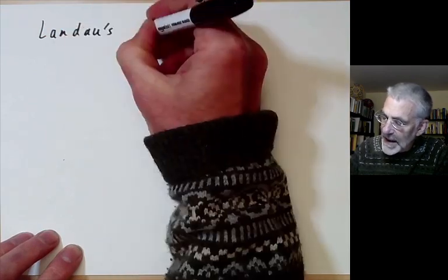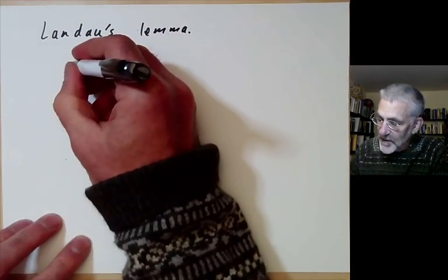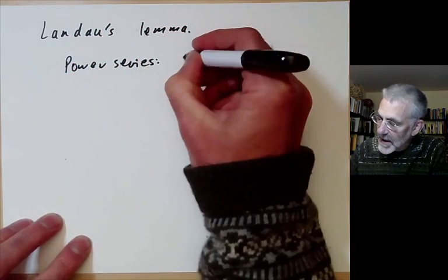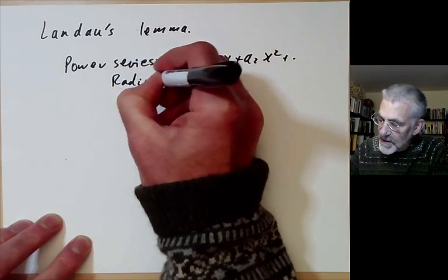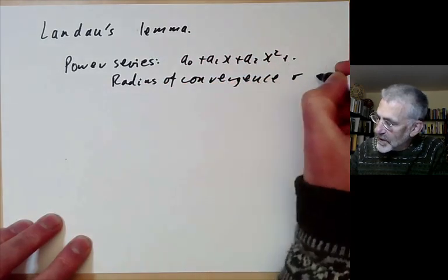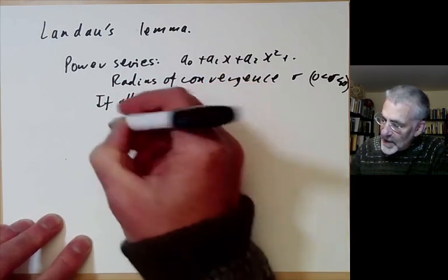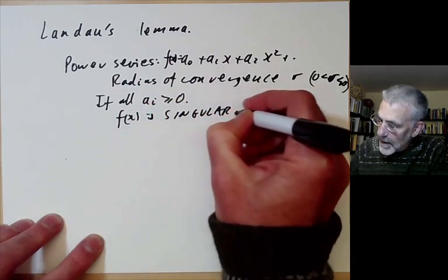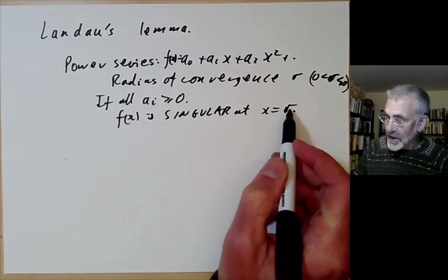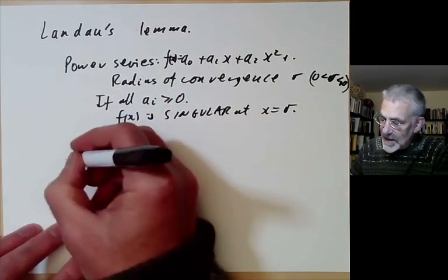Why should we want L-functions to have non-negative coefficients? There is a very useful lemma due to Landau, which is an analogue of the following theorem in complex analysis for power series. Suppose a_0 + a_1·x + a_2·x² + ... is a power series with radius of convergence r, where 0 < r < ∞. If all the a_i are ≥ 0 and this function is f(x), then f(x) is singular at x = r — it cannot possibly be holomorphic at that real positive number r.